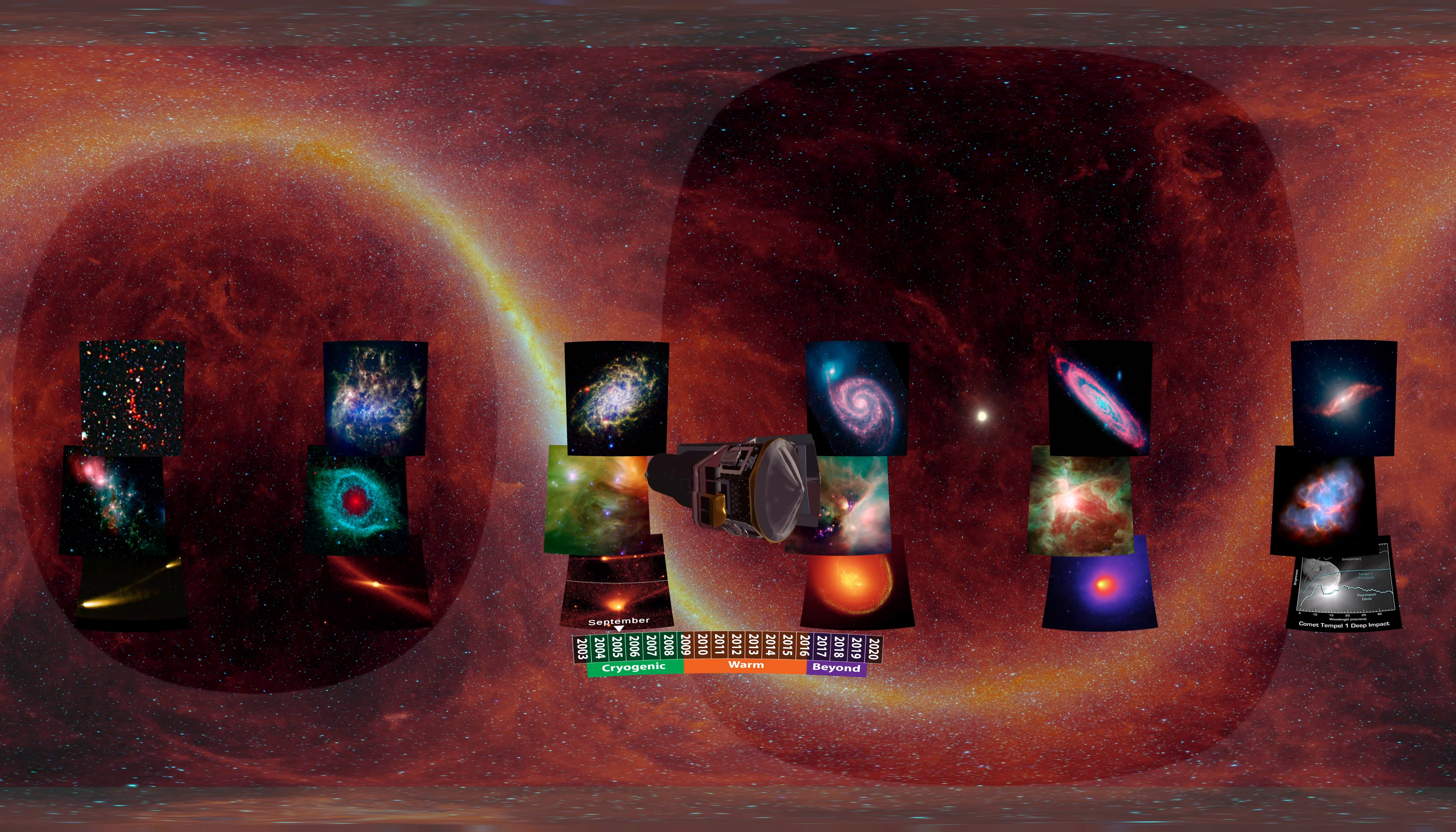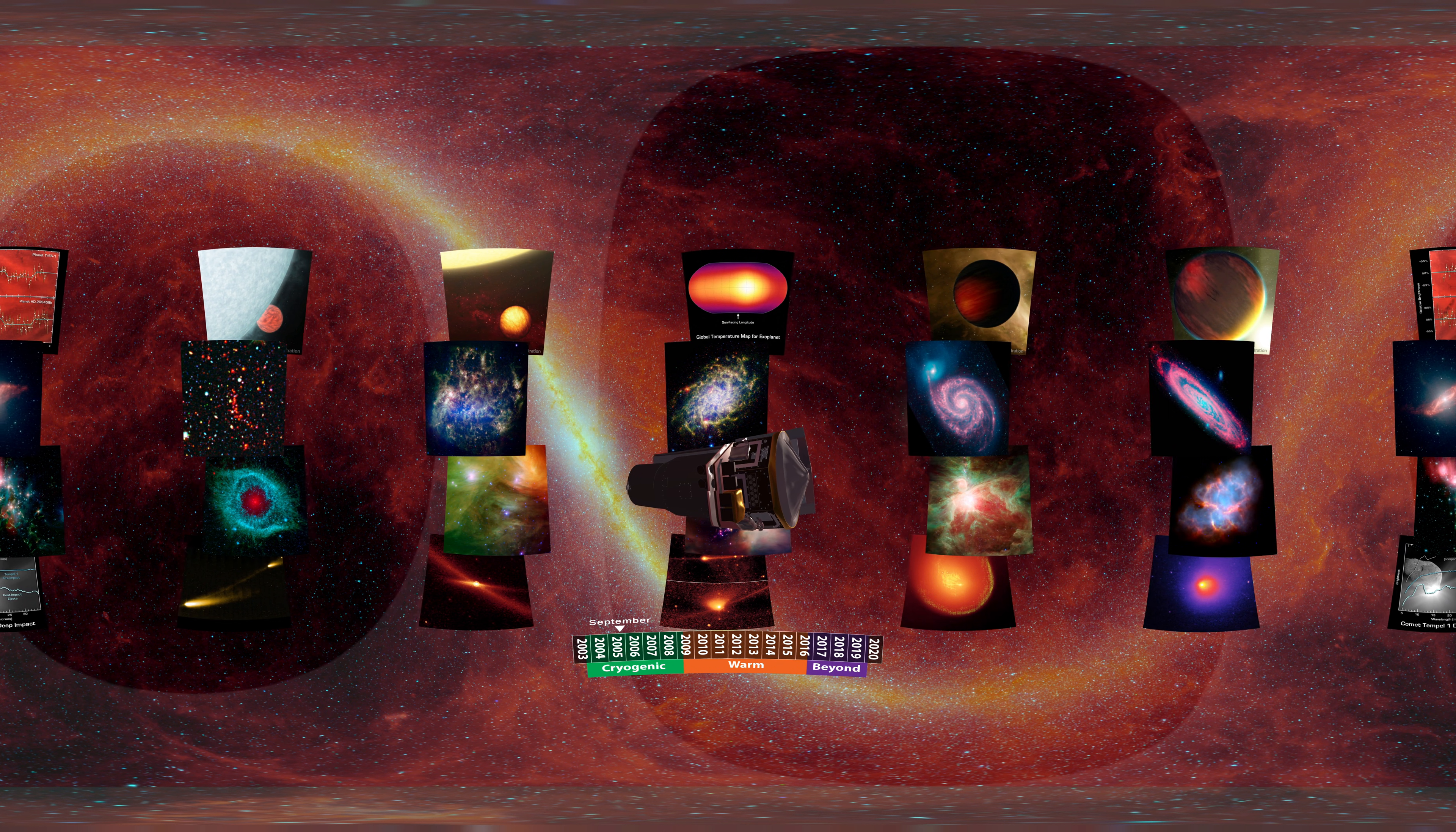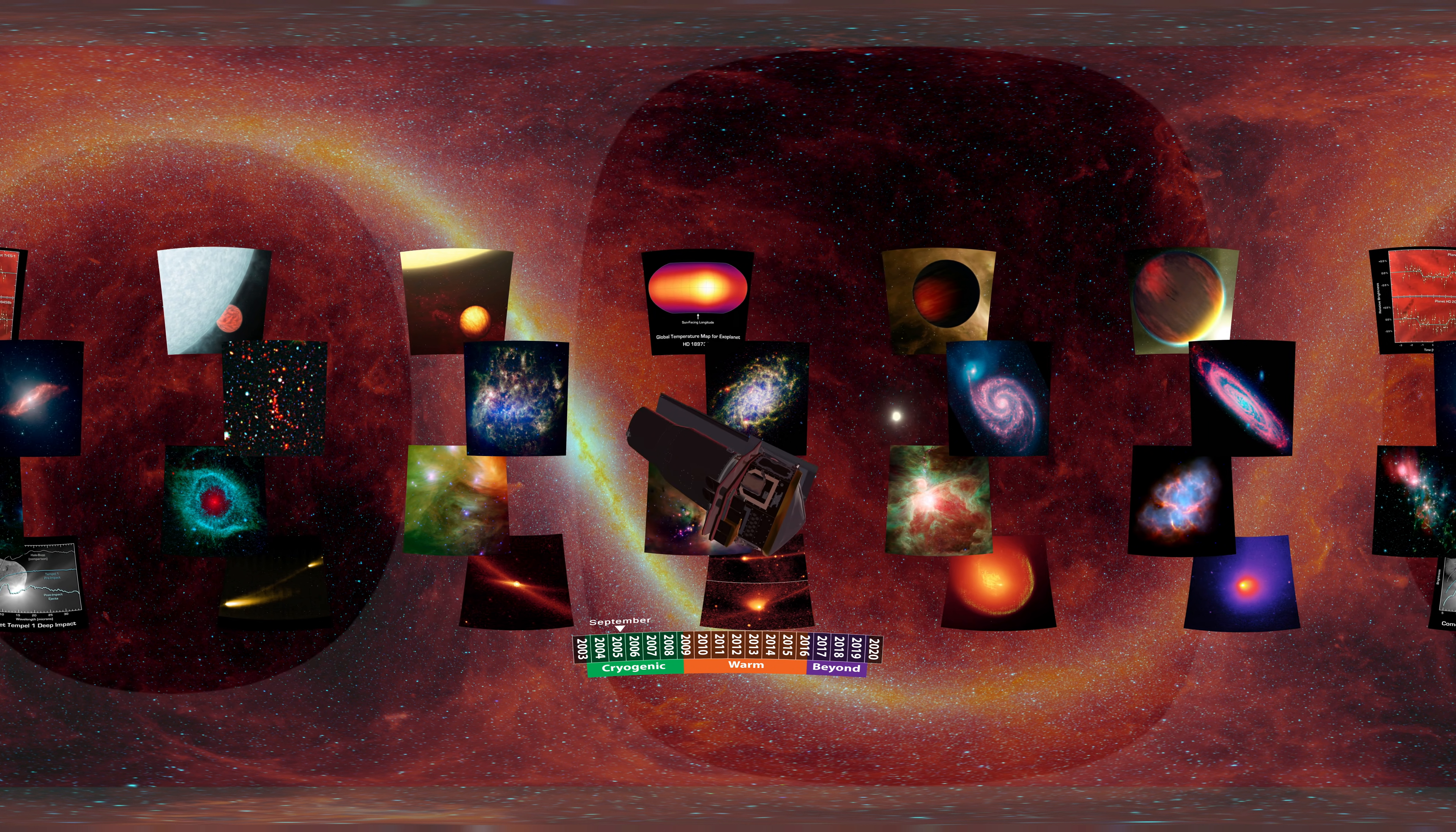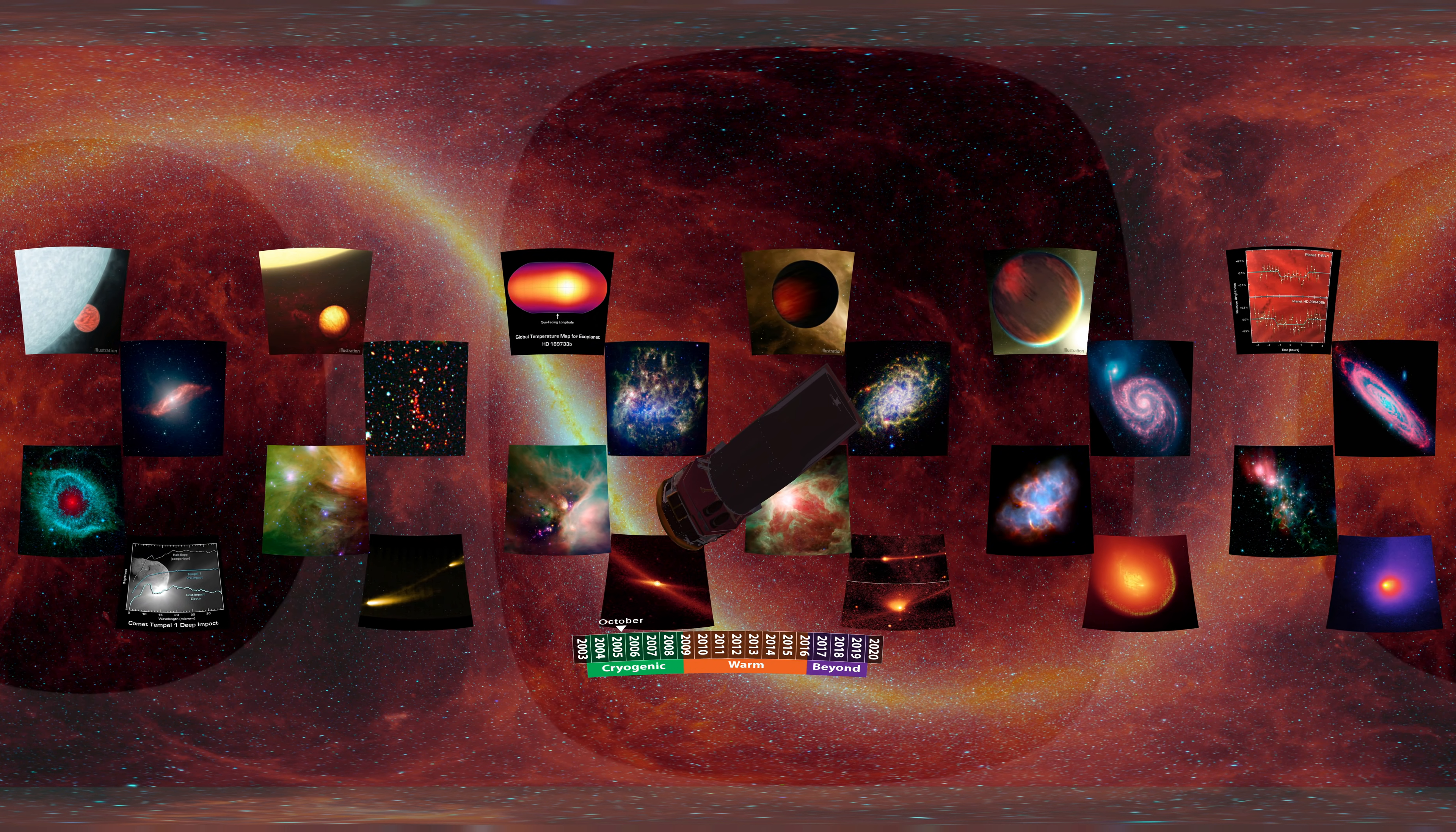Spitzer was also the first telescope to directly measure the light from hot, Jupiter-sized planets closely orbiting their stars. From this, astronomers determined global temperature and wind patterns, essentially providing exoplanetary weather reports.